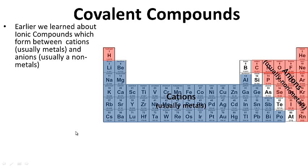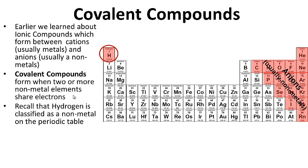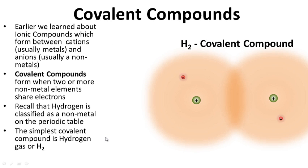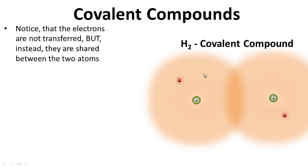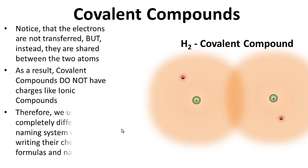Covalent compounds. Earlier we learned about ionic compounds which form between cations, which are usually metals, and anions, which are usually non-metals. But covalent compounds, on the other hand, form when two or more non-metal elements share electrons. Recall that hydrogen is a non-metal. The simplest covalent compound is hydrogen gas, or H2. Notice that the electrons are not transferred — in an ionic bond they were transferred — but in a covalent compound they are shared between the two atoms. As a result, covalent compounds do not have charges like ionic compounds. Therefore, we use a completely different naming system when writing their chemical formulas and names.